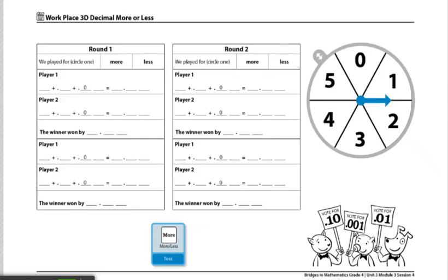These are the directions for Workplace 3D decimals more or less. The materials each player will need are two decimal more or less record sheets, two sets of base 10 area pieces, one spinner overlay, and one more or less die.